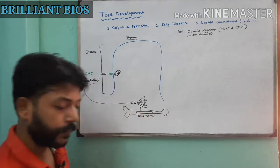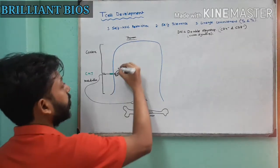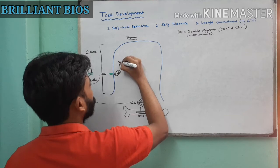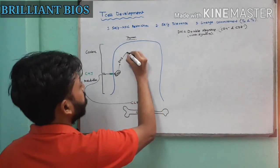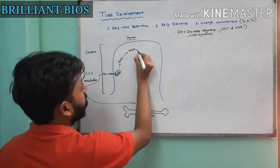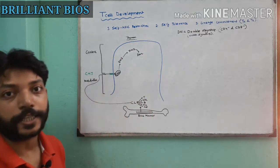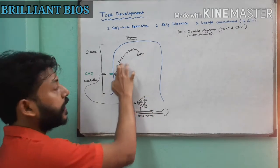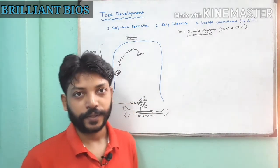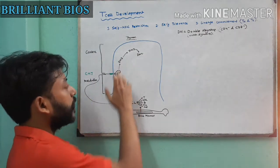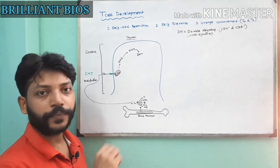Through Notch signaling, the DN1 cell becomes DN2, and subsequently DN2 becomes DN3, and DN3 becomes DN4. There are some major changes during these transitions. In the late DN2 stage, the cell becomes fully committed toward the T cell lineage.